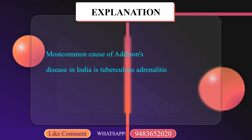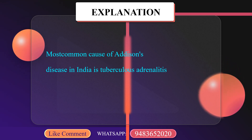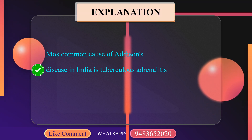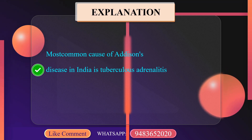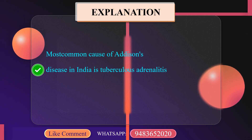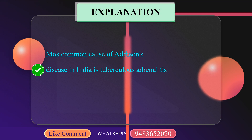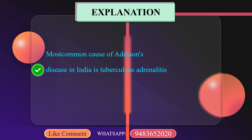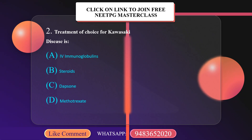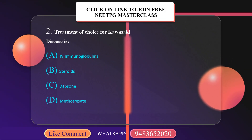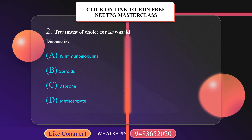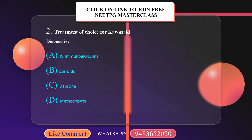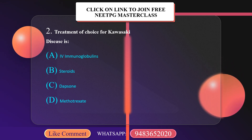The most common cause of Addison's disease in India is tubercular adrenalitis. Treatment of choice for Kawasaki disease is: A. IV immunoglobulin. B. Steroids. C. Dapsone. D. Methotrexate.